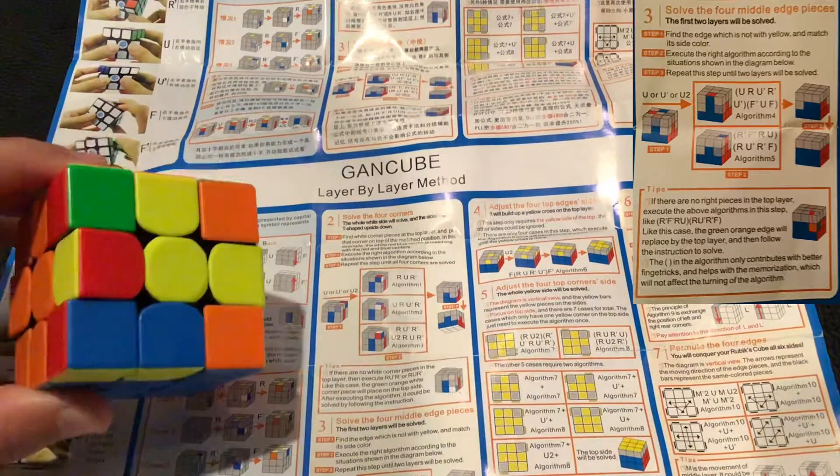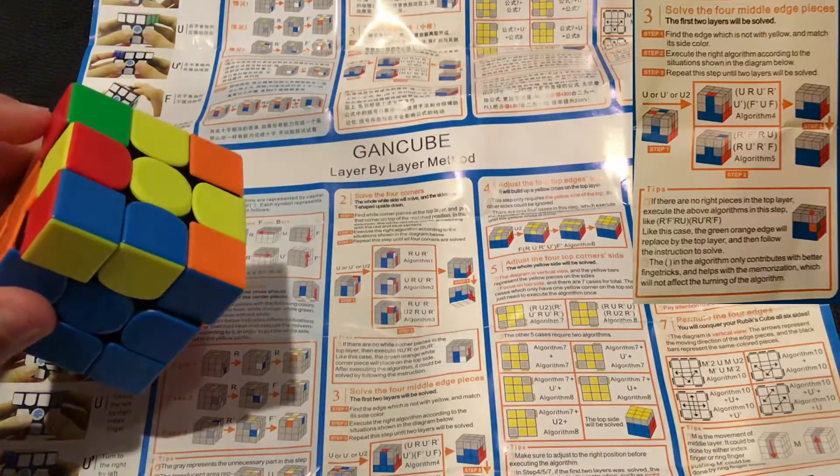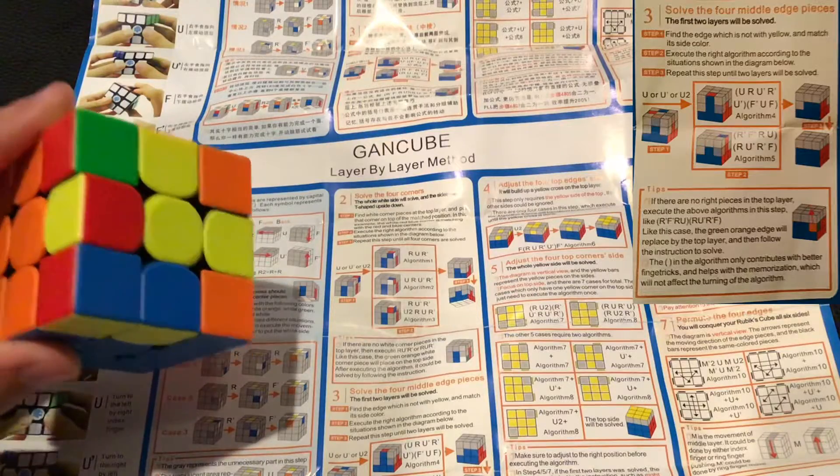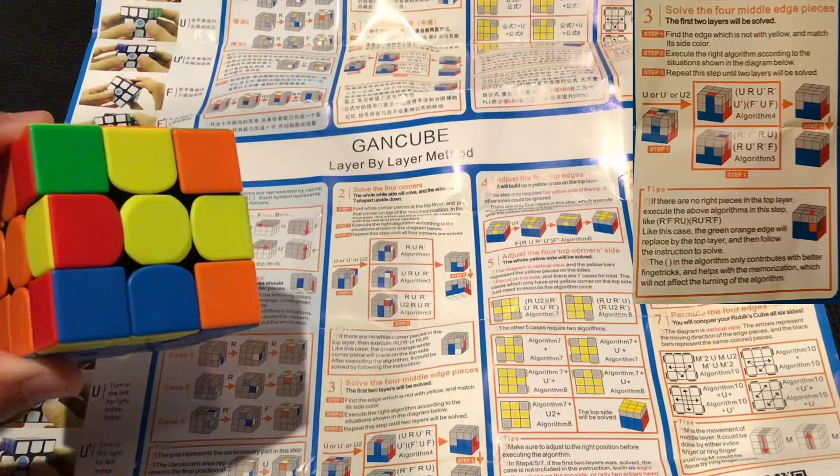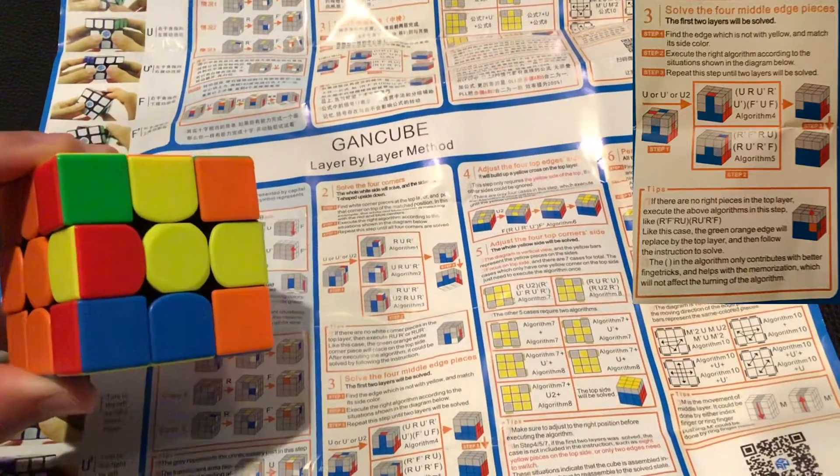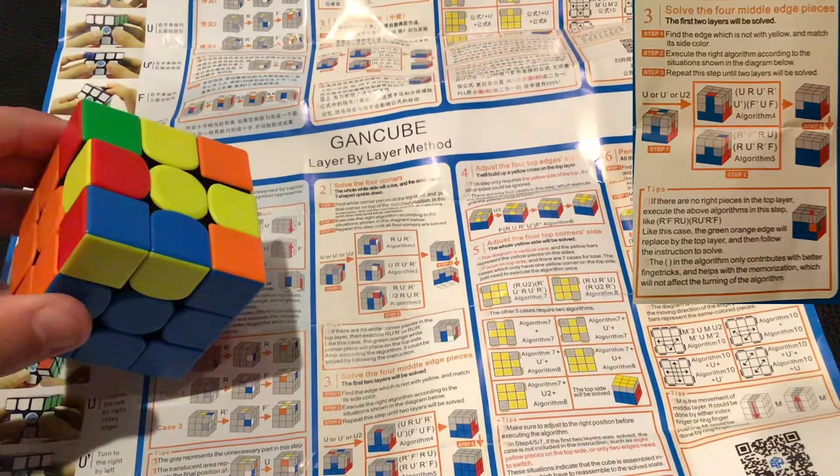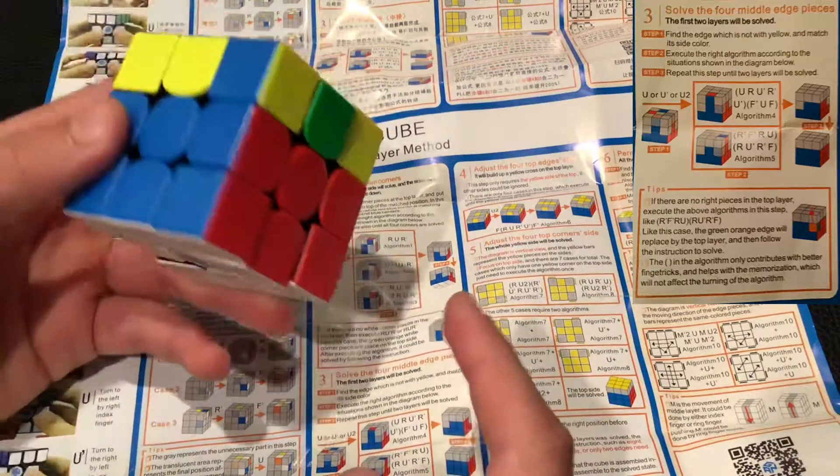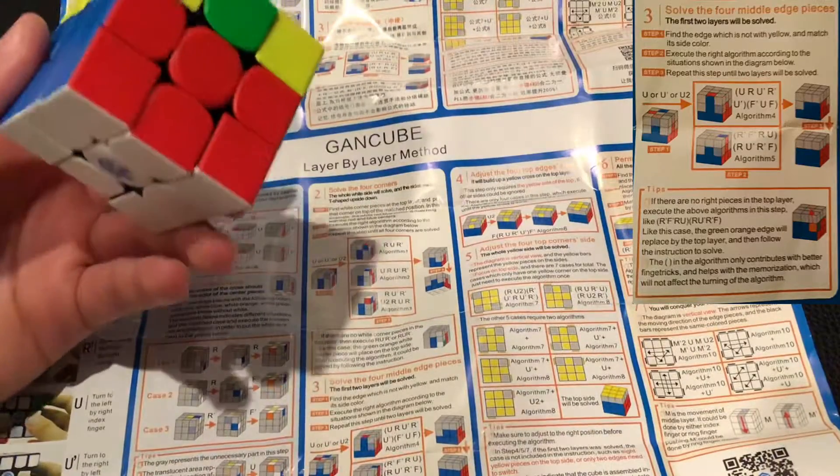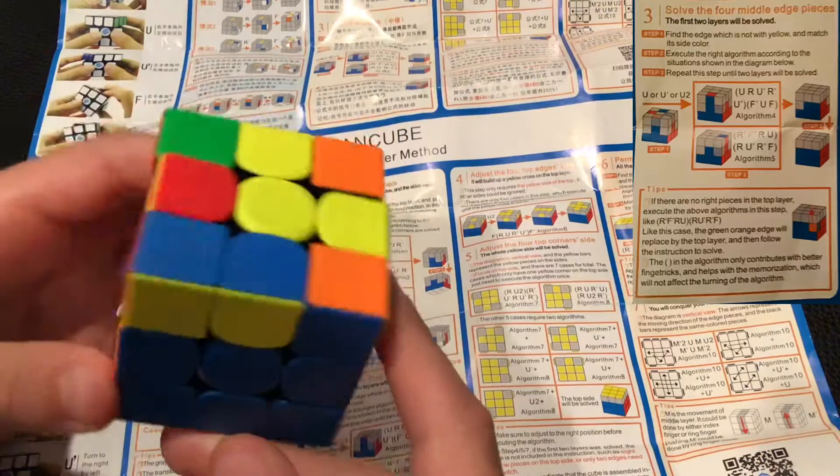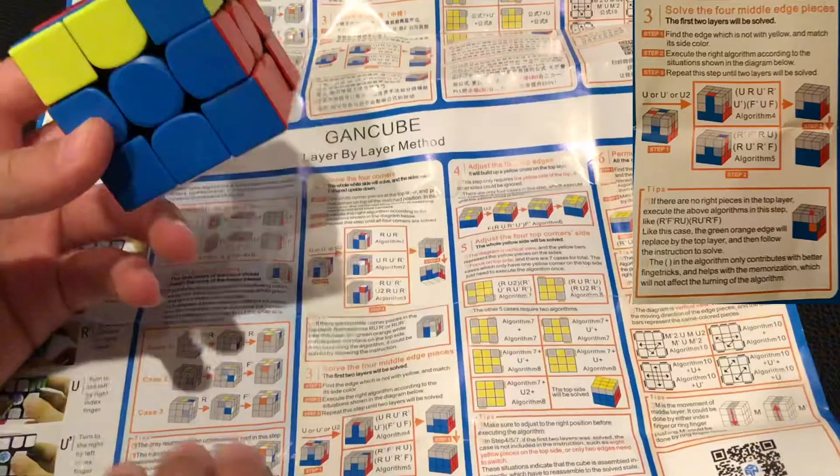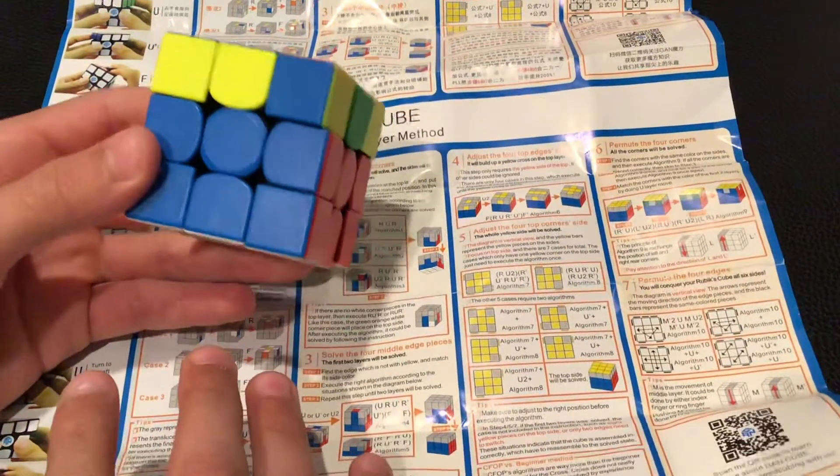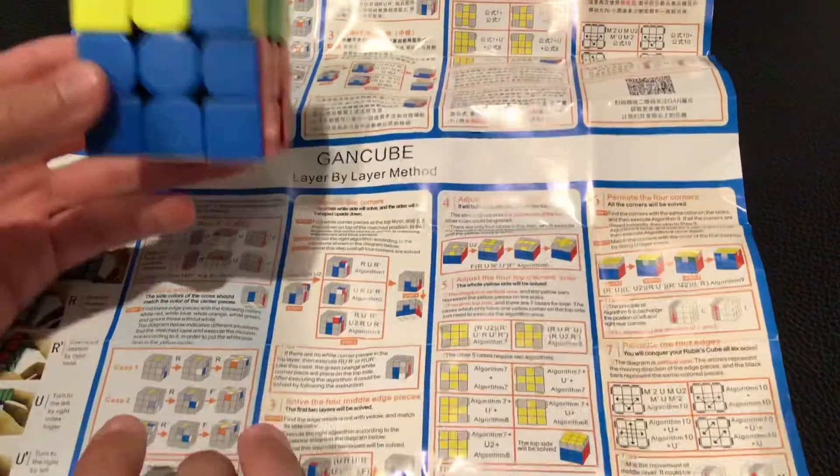If there are no right pieces in the top layer, execute the algorithms above in this step. The parentheses in the algorithm only contributes to better finger tricks, helps with the memorization, which will not affect the turning of the algorithm. All right, that makes sense. And I mean, if any of you get a cube like this, and then you just want to solve it using this method, it actually probably will help. Like, if you just solve the whole cube using the GAN CFOP tutorial, that would probably help memorization. I also made my own CFOP tutorial, so I printed it off. It's a beginner tutorial, so if you guys want to check that out, the link will be in the description below.